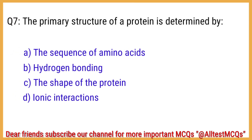Q7. The primary structure of a protein is determined by? The right answer is option A: The sequence of amino acids.